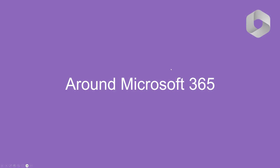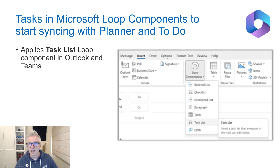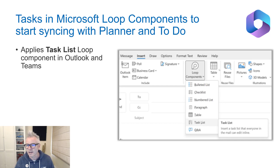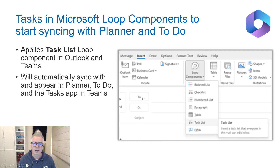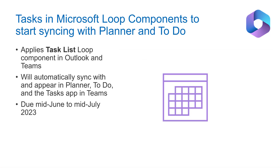We've got to the Around Microsoft 365 section, which means we're getting near to the end. First up: tasks in Microsoft Loop components to start syncing with Planner and To Do. Inside Outlook, it applies to the task list Loop component — it will automatically sync and appear in Planner, To Do, and the Tasks app in Teams. That is due by mid-July this year.